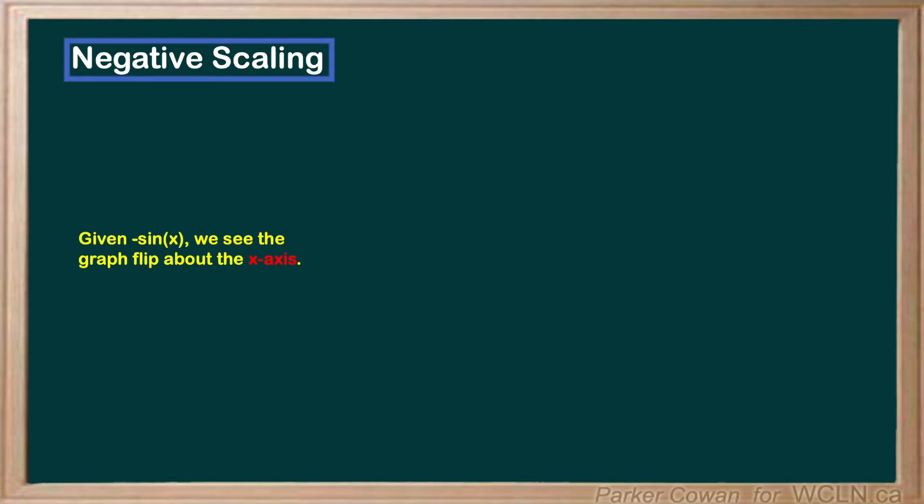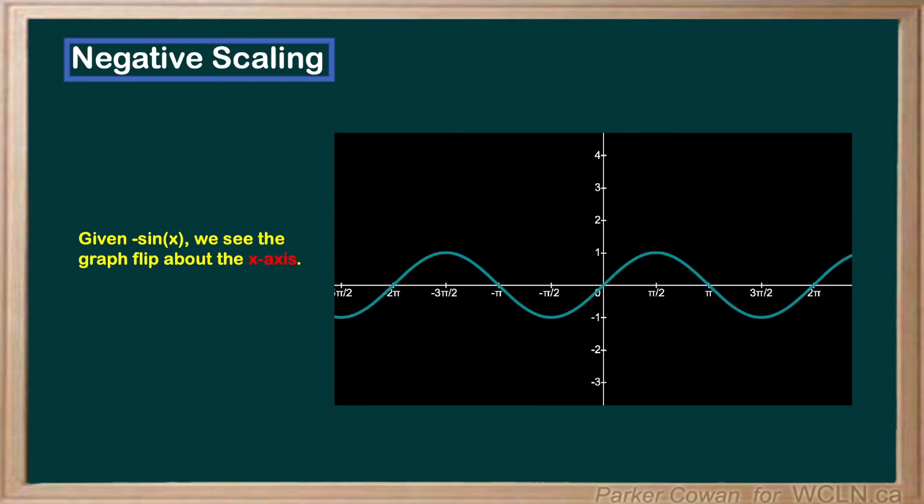Furthermore, if we apply a negative sign to the outside, we see the graph flip vertically about the x-axis.